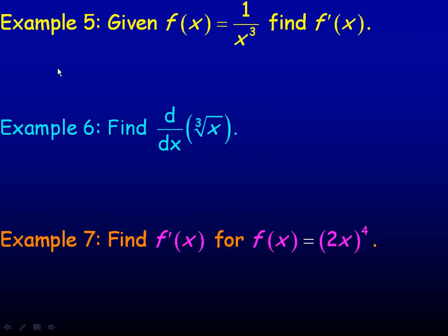In example five, we're given that f(x) is 1/x³. Now there is a way to differentiate quotients, but that's not in this lesson. What you should do, since there's a constant in the numerator, is rewrite this as,